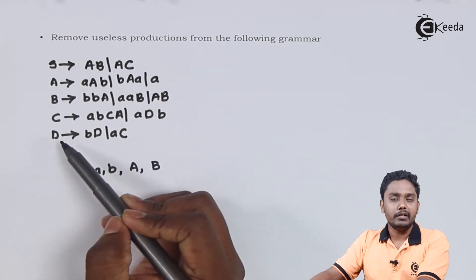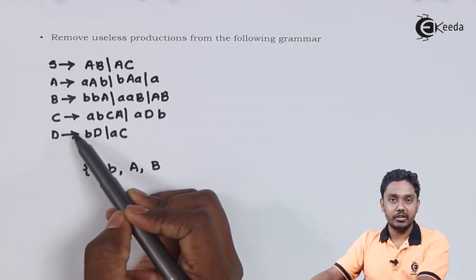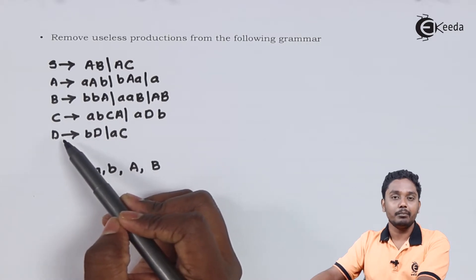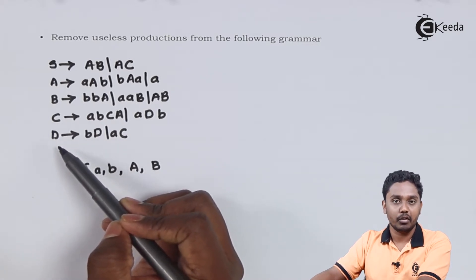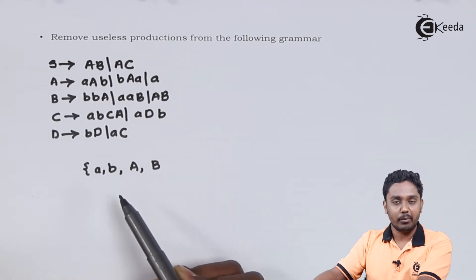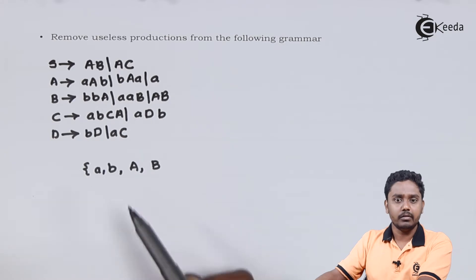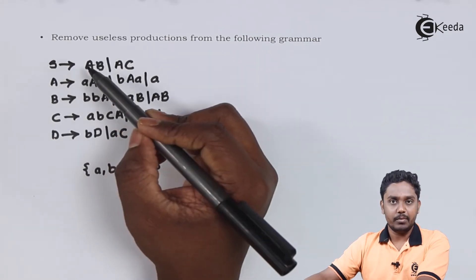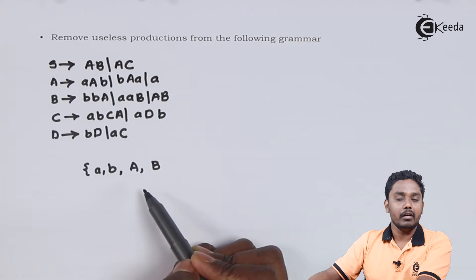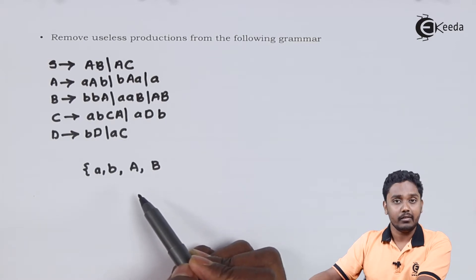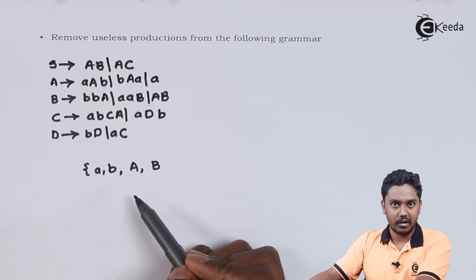C and D are producing themselves with each other but they are not producing completely any terminal consisting of just A, B and capital A and capital B, and hence they are not derivable. S is producing A, B and A, B is both derivable and hence S is derivable.